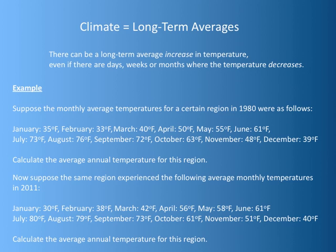Let's examine the results. In 1980, the average temperature for the year should have been 53.75 degrees Fahrenheit. Doing the same thing for 2011, you should have found an answer of 55.7 degrees Fahrenheit, which is 2 degrees warmer than the 1980 average. This increase in temperature by itself is not particularly interesting, but what might lead to confusion is if you look at the average temperature during particular months.